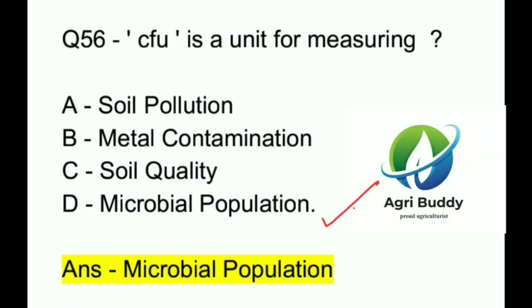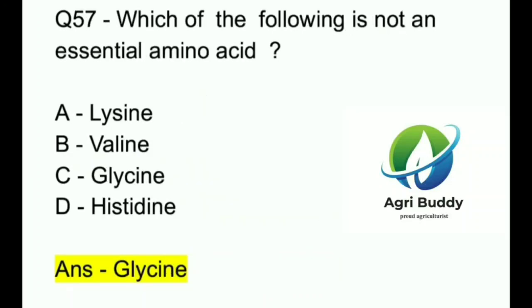Question 57. Which of the following is not an essential amino acid? A. Lysine. B. Valine. C. Glycine. D. Histidine. And the answer is Glycine.